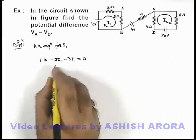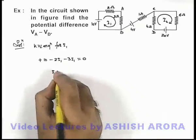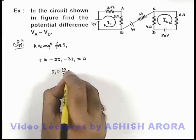And solving this equation we can see we are getting the value of i_1 which is 10 by 5, that is 2 ampere.